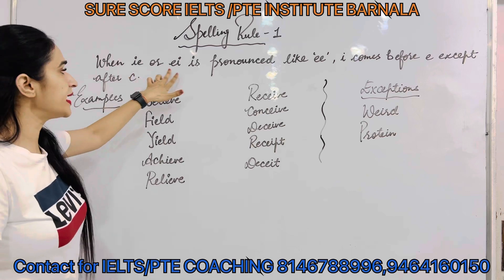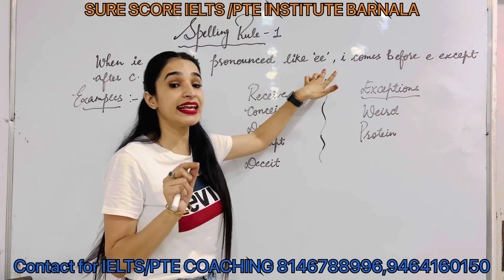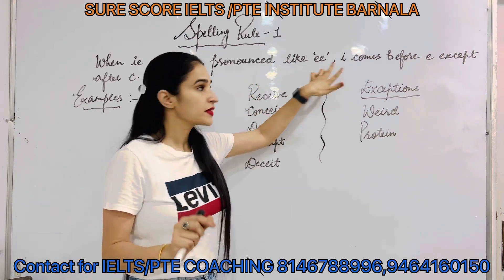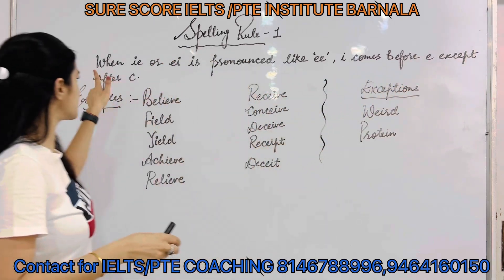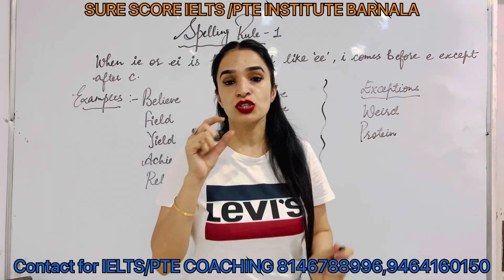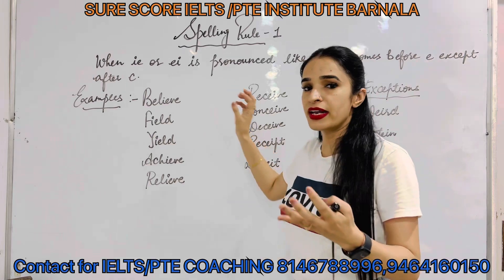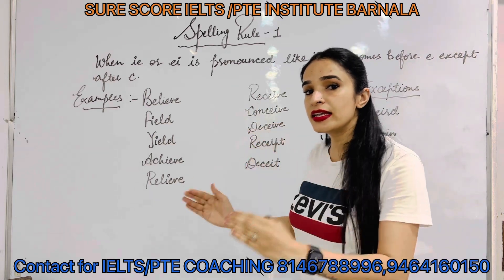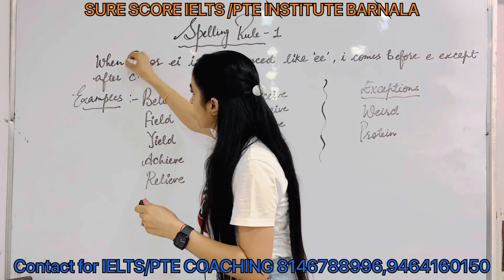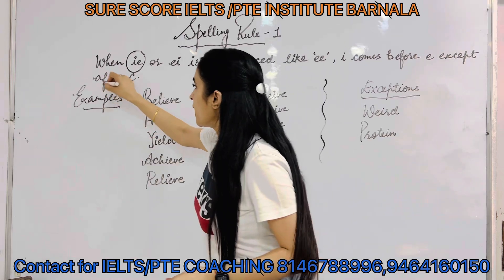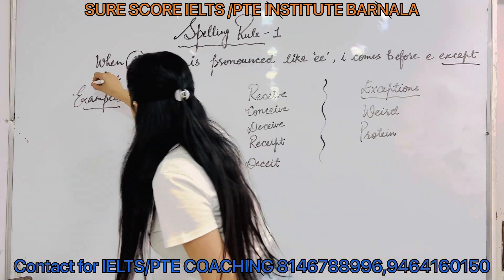When IE or EI is pronounced like E, I comes before E except after C. So, IE or EI — when the sound of E is pronounced like E, they are called exact after C.